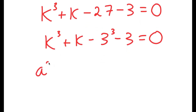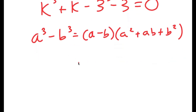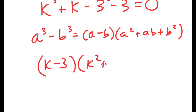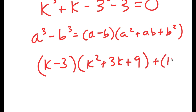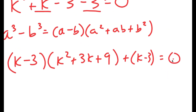Now, if I have something in the form a to the power of 3 minus b to the power of 3, this is equal to a minus b times a squared plus ab plus b squared. So this is equal to k minus 3 times k squared plus 3k plus 3 squared, which is 9. And we can't forget our plus k minus 3 at the end, which is this part right here. And this is equal to 0.